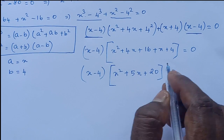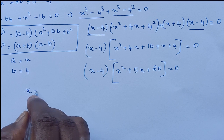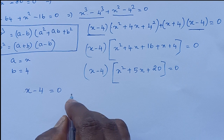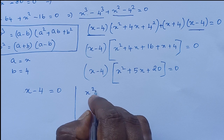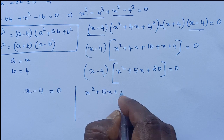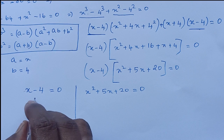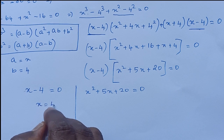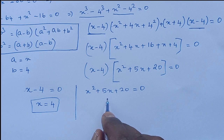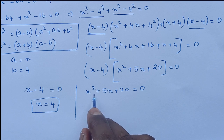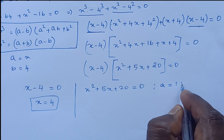Now we can equate and split this. So we can say x minus 4 is equal to 0 — that is the first equation. And the second is x square plus 5x plus 20 is equal to 0. From x minus 4 equal to 0, x is equal to 4. So we got one root. Now we can simplify the second equation.